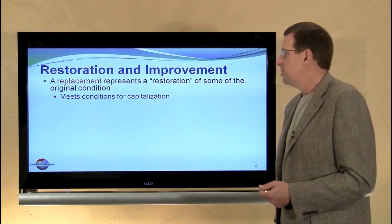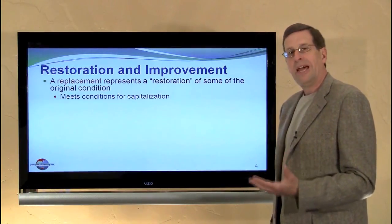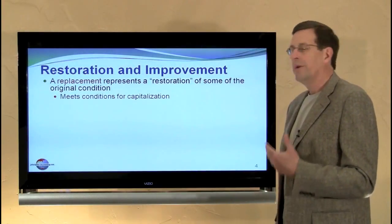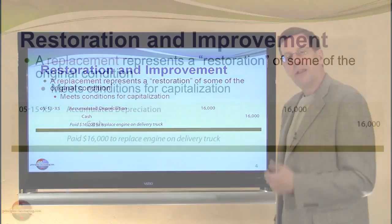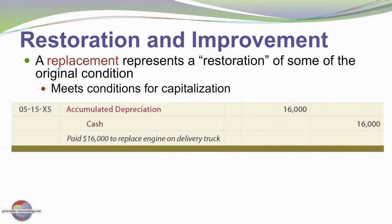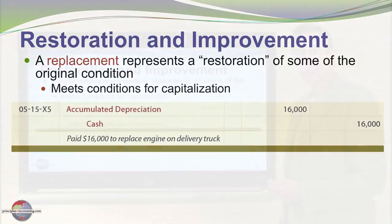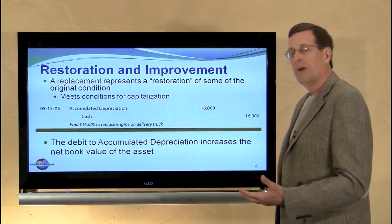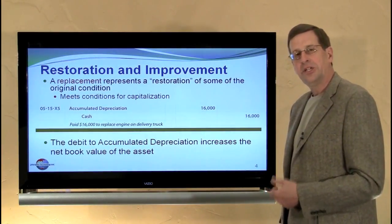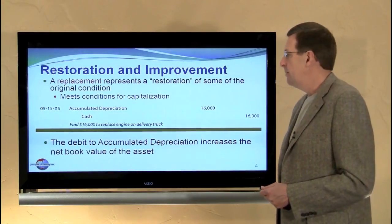When we look at capital expenditures, we can further consider that some may be replacement in nature — that is, we're restoring some of the original condition of the asset. It meets the condition for capitalization. For example, here we're paying $16,000 to replace the engine on a truck. It's a similar engine going in to replace an old worn-out engine. Crediting cash $16,000, and debiting accumulated depreciation to, in essence, undo some of the depreciation that's on the books. It causes the net book value of the asset to increase. Since it's a restoration or replacement of existing condition, we capitalize that by reducing accumulated depreciation.